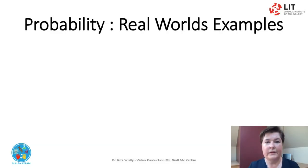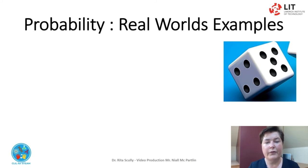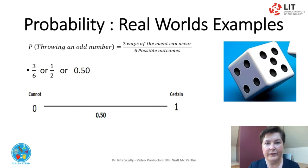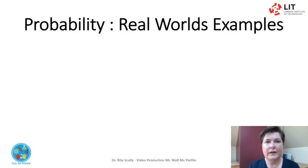Now let's look at the probability of throwing an odd number. Again we have our six-sided dice. The probability of throwing an odd number can occur in three ways: 1, 3, or 5. There are six possible outcomes. This can be written as 3 over 6, or 1 over 2, or 0.5. This can be represented on the probability line as 0.5.